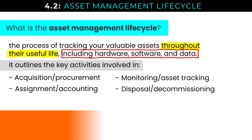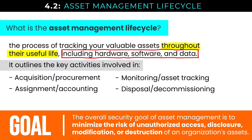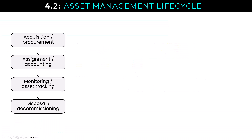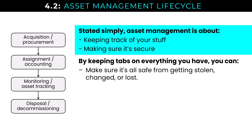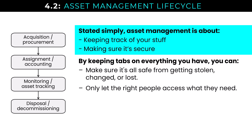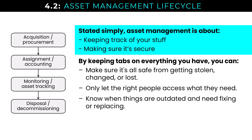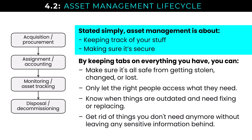The overall goal of the asset management lifecycle is minimizing the risk of unauthorized access, data disclosure, modification, or destruction of an organization's assets. By keeping track of everything we have, we can make sure it's all safe from being stolen, changed, or lost — only letting the right people access what they need through classification and least privilege access. We know when things are outdated and need fixing, replacing, or patching, and we get rid of things we don't need anymore without leaving any sensitive information behind.